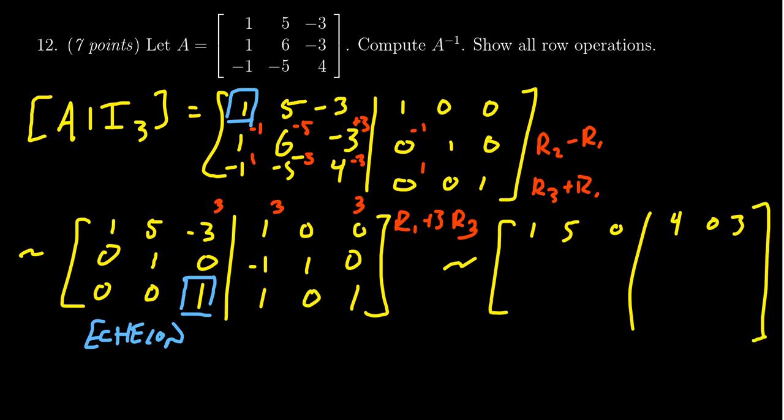So we're going to record this down. The first row becomes 1, 5, 0. And then you're going to get 4, 0, 3. Didn't do anything to the second row. So we'll just copy it down. 0, 1, 0, -1, 1, 0. And then for the third row, 0, 0, 1, 1, 0, 1. We didn't do anything to that one.